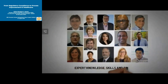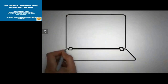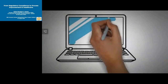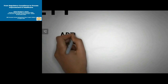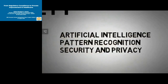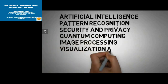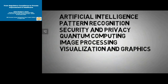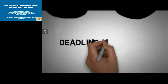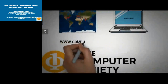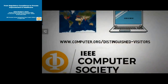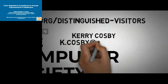If you have expert knowledge, skills, and abilities, coupled with a record of technical or academic successes in any area relating to computing or information technology, let other industry and academic leaders hear what you have to say. Join us now as a Distinguished Visitor. Although we're looking for experts in all areas, this year the following fields are of particular interest: Artificial Intelligence, Pattern Recognition, Security and Privacy, Quantum Computing, Image Processing, and Visualization and Graphics. Selection is competitive — nominate yourself or someone else. The deadline for nominations is November 3rd, and the program year begins January 1st. Find more information at www.computer.org/distinguished-visitors, or contact Kerry Cosby at k.cosby@computer.org.